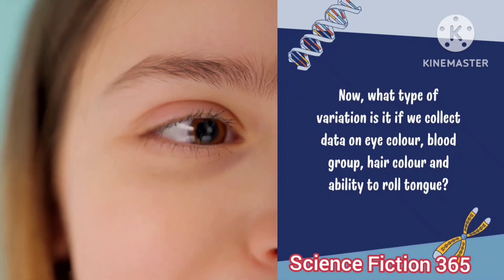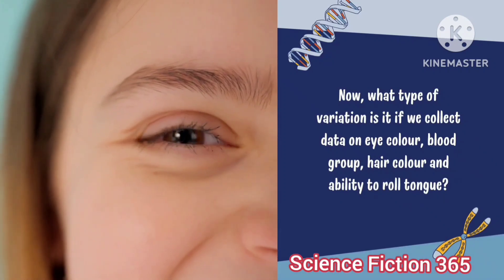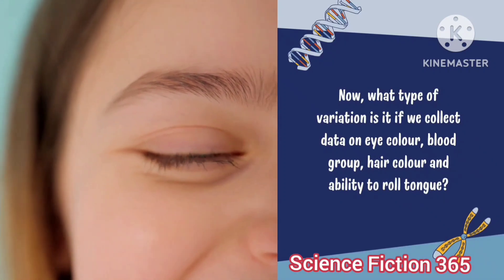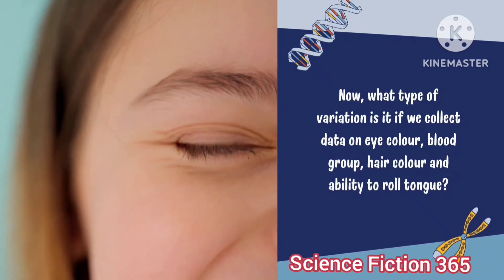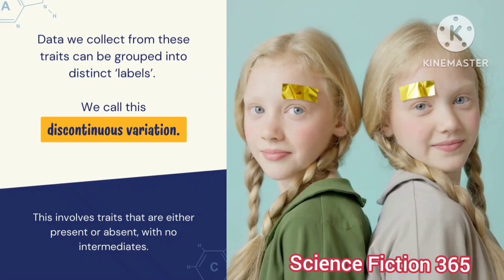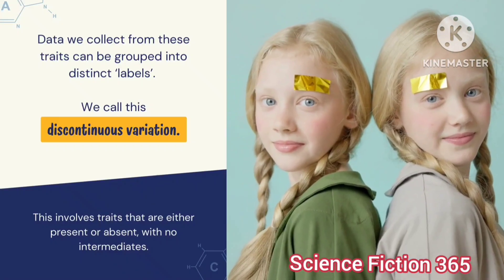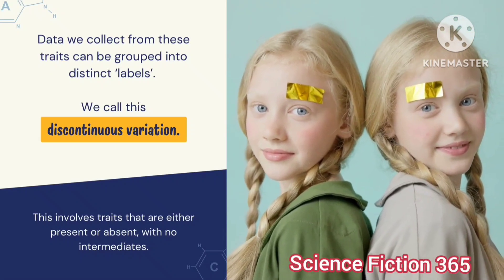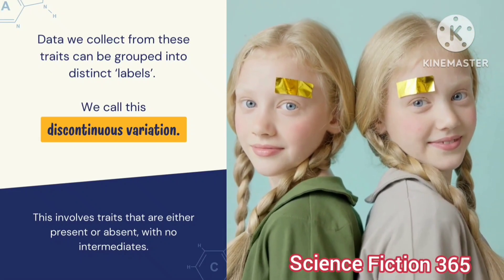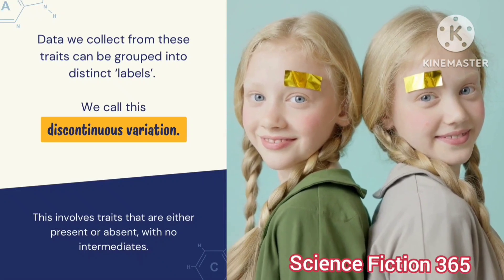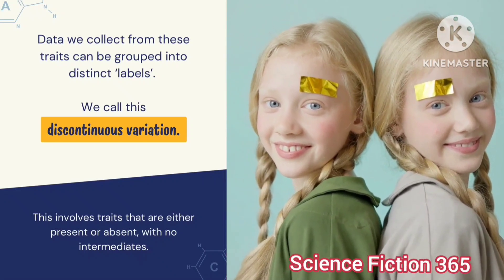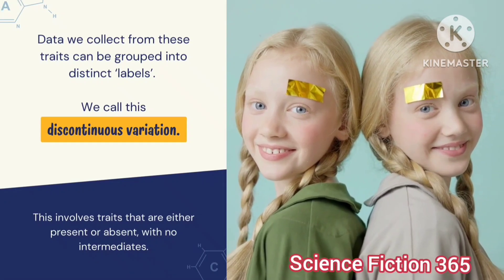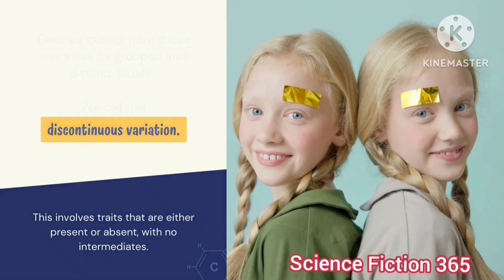What type of variation would it be if we collected data on eye color, blood group, hair color, and ability to roll your tongue? The data collected from these traits can be grouped into distinct labels — we call this discontinuous variation. This involves traits that are either present or absent, with no intermediates.